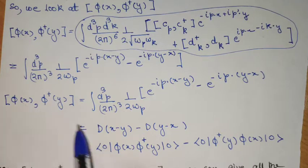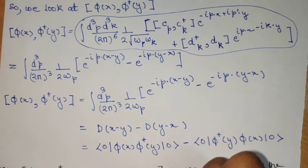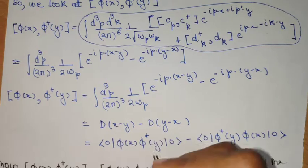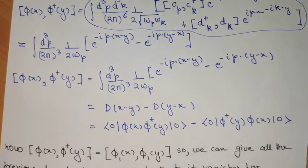So you see, this commutator gives dx minus y minus dy minus x. But the interpretation of dx minus y,